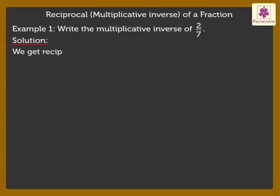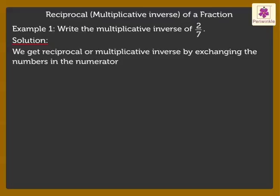We get the Reciprocal or Multiplicative Inverse by exchanging the numbers in the numerator and the denominator. So, the Multiplicative Inverse of 2 upon 7 is 7 upon 2.